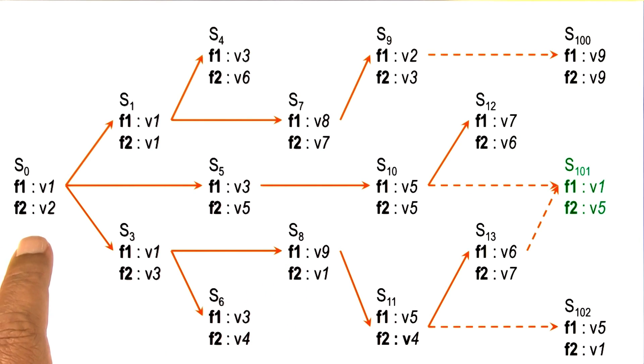So initially, the pitcher is at state s0, and the pitcher wants to achieve some state s101. And at a state s101, presumably, the pitcher's goal has been accomplished. So we may think of the pitcher's decision making as some kind of a path from its current state to this particular goal state.